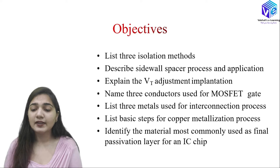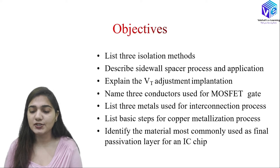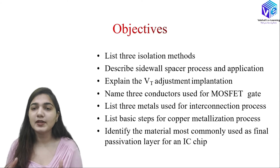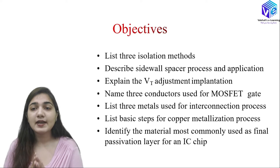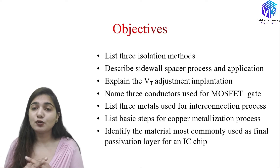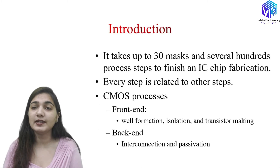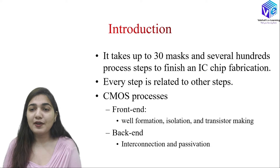We are going to see the basic steps for the copper metallization process. At last, we are going to identify the material most commonly used as a final passivation layer for an IC chip. The passivation layer protects the chip from the environment — if I expose the metallized chip to the environment it might degrade, so we have a passivation layer at the top of the chip.